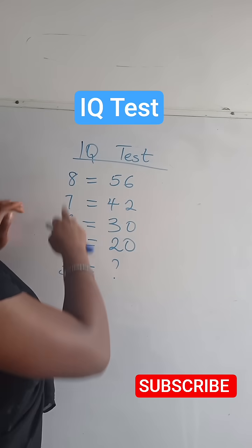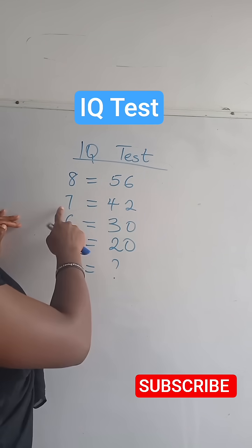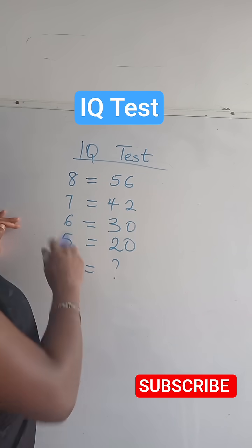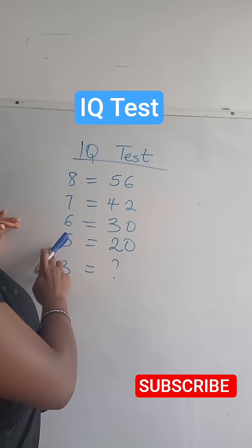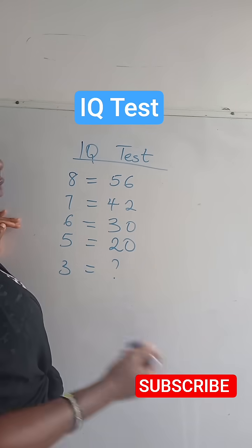So let's solve this. Here we have 8 equals 56, 7 equals 42, 6 equals 30, 5 equals 20, and 3 we do not know.